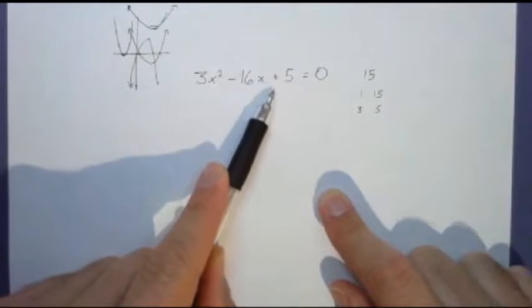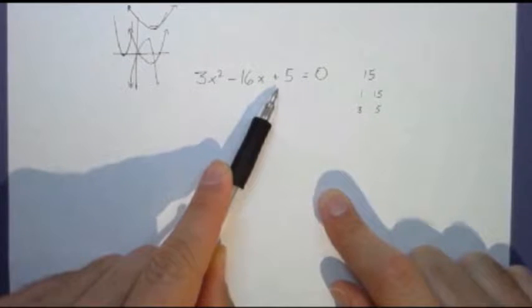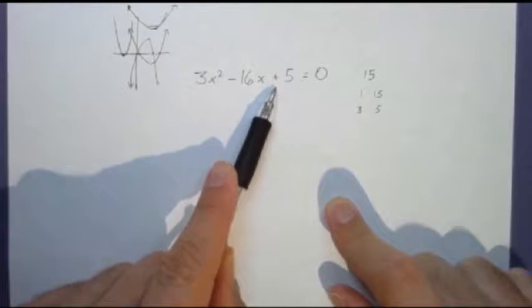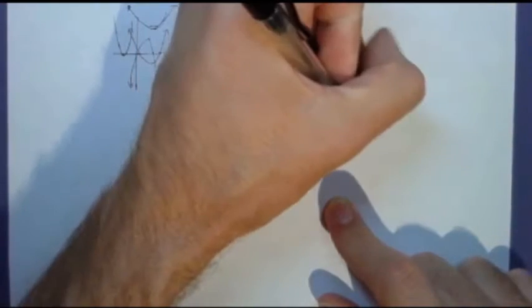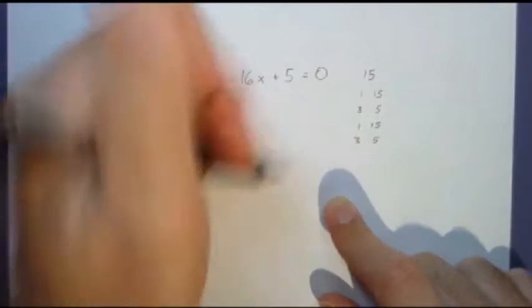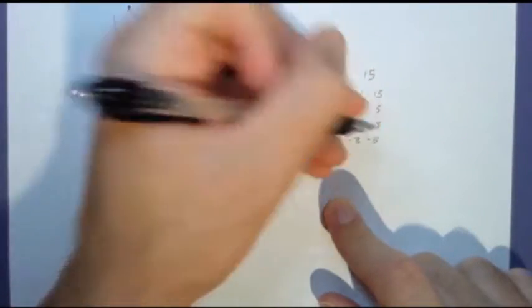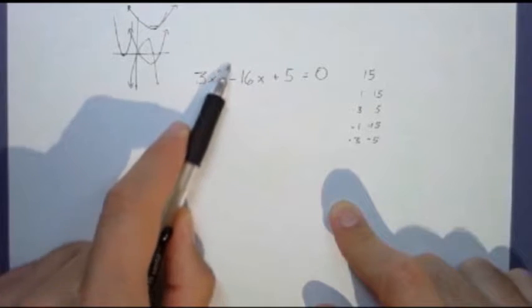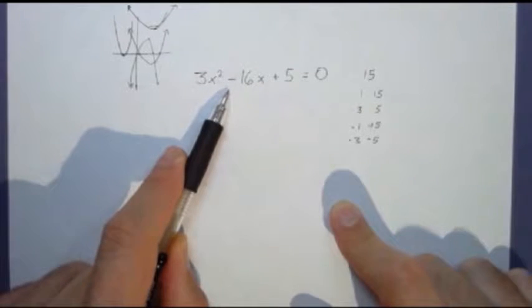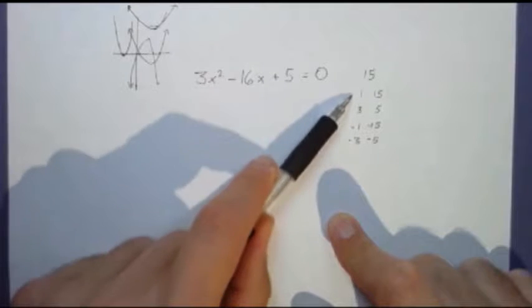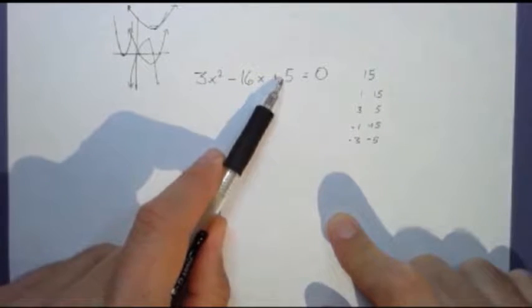Now because this is positive, there are two ways that we could make this fifteen. For a number to be positive, either both could be positive or both could be negative. So we have both positive and both negative. We can tell by looking at this which set we need. Since this is negative, with this being plus, we're looking at these numbers as a sum. If this were negative, we would be looking for a difference.